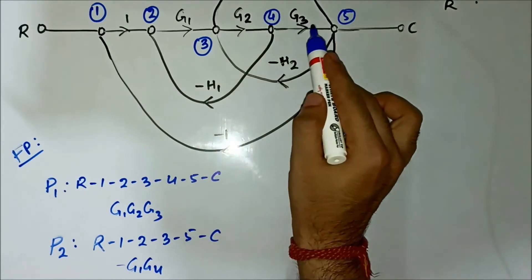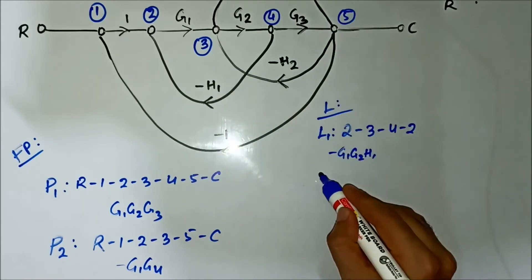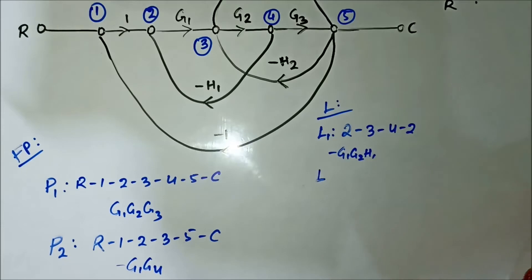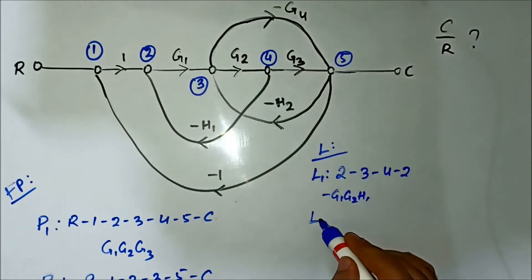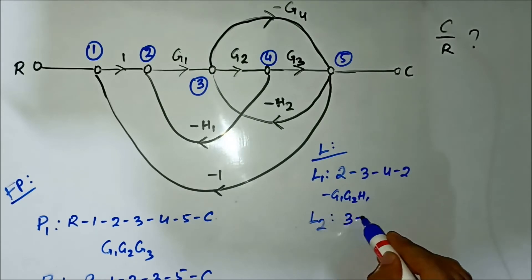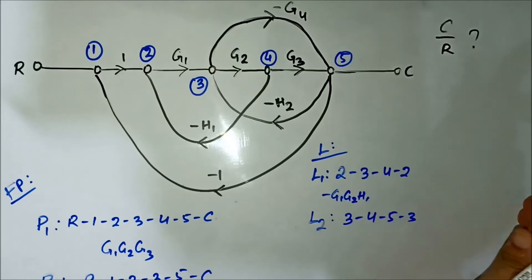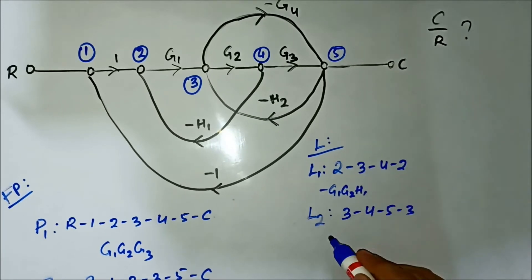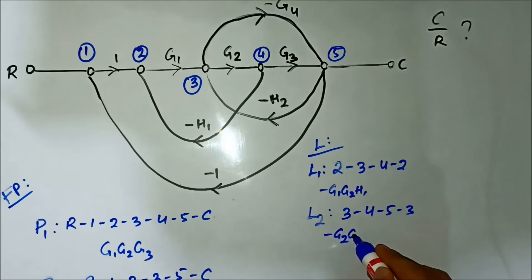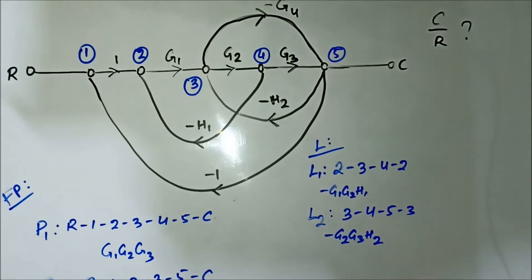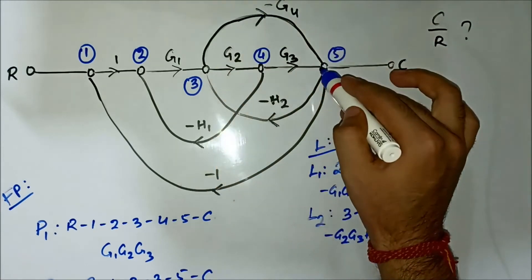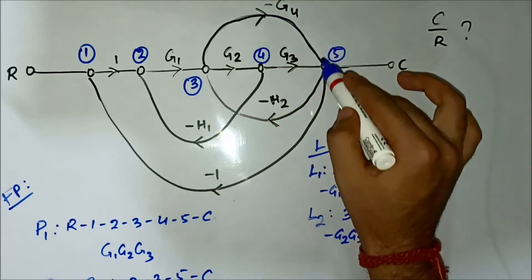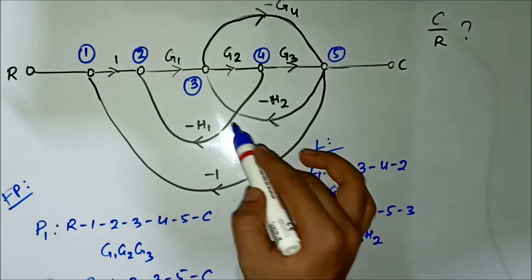Loop L1 is 2→3→4→2 and its gain is -G1·G2·H1. Another loop is L2: 3→4→5→3, and its gain is -G2·G3·H2.